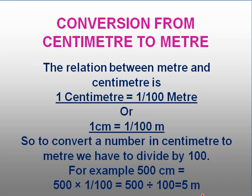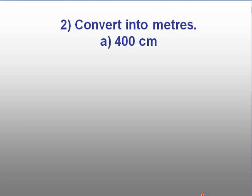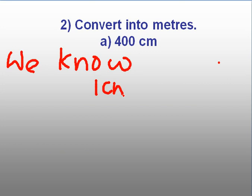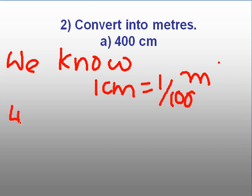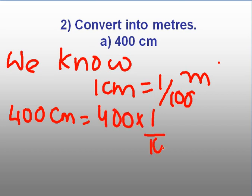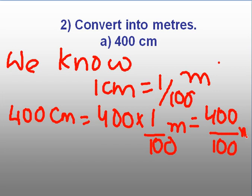Let us do some questions to understand this. Convert into meters: 400 centimeters. You will write the relation between centimeter and meter: 1 centimeter is equal to 1 by 100 meter. So 400 centimeters is equal to 400 into 1 by 100 meters, that is 400 by 100 meters. Since 100 fours are 400, the answer is 4 meters.